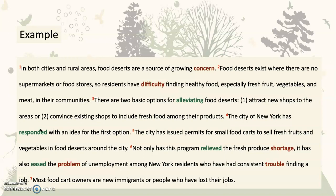Another word used for solving a problem would be responded — so the city of New York responded to the problem. And then in sentence number six, we have the word relieved. This is another solution word, a word for solving the problem. And then we have the word shortage. Shortage is a problem word — usually when there's a shortage of something, that indicates a problem. Here we have the word eased. Eased is a solution word, making something easier, making something better. We can use the word ease for a solution. The word problem of course means it's talking about a problem. Over here we have the word trouble, which is another word for a problem.